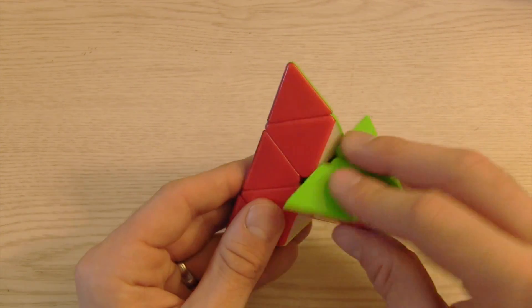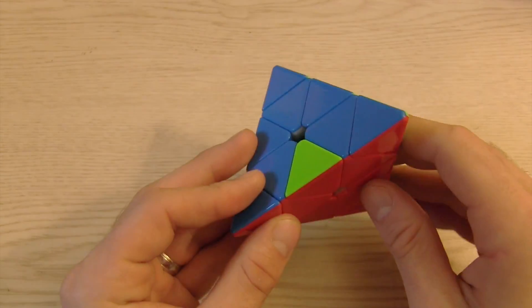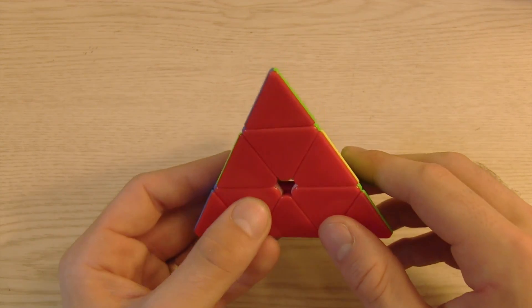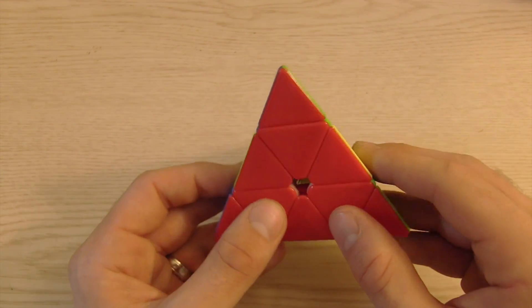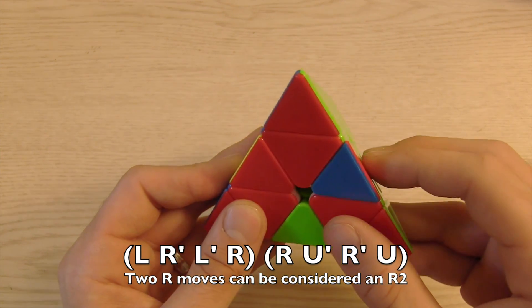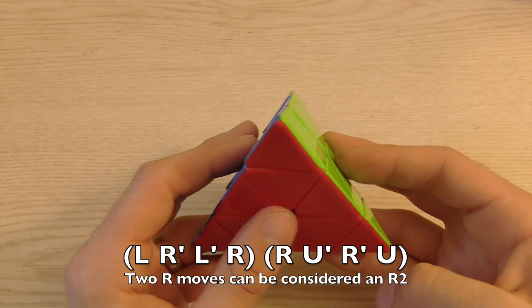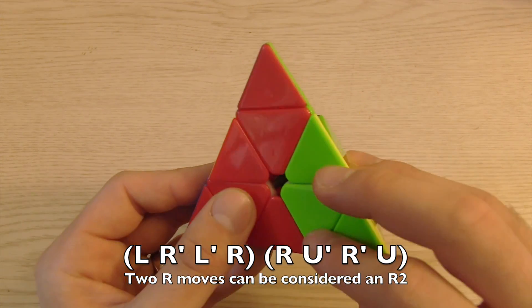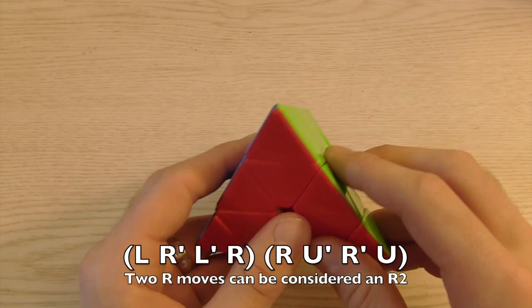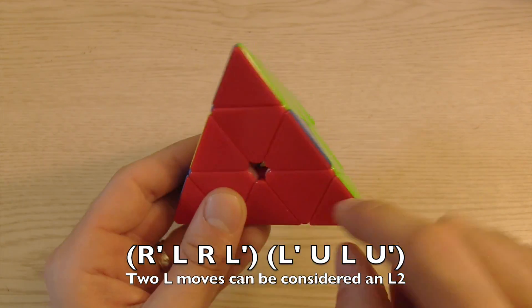So here's the first case when you just look at which ones are flipped and does it need to go to one spot or the other one up. So you just look at which way it goes. The next one is where they're all oriented correctly but not in the right spots. So if this needs to go clockwise what you'll do is start with that first algorithm starting on the left hand. So doing L R' L' R and then you do another R U' R' U. So you could just write that as R2 L R' L' R2 U' R' U. And that'd be the same thing on the left hand.